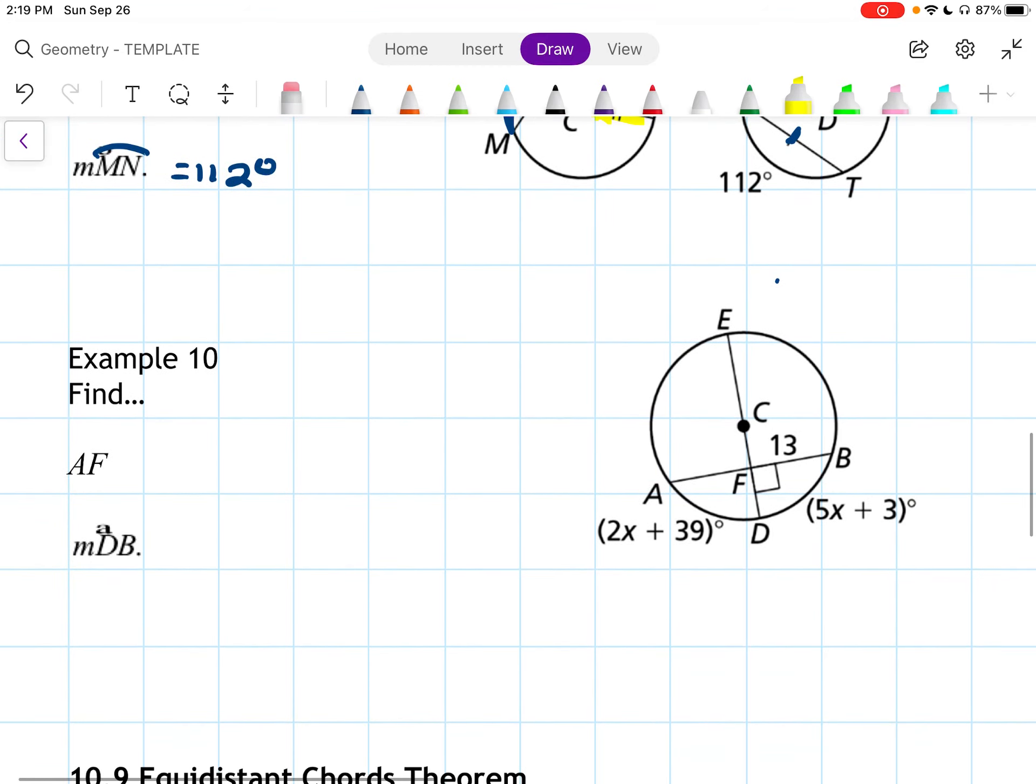Example 10. Find AF and then measure of arc DB. Well, AF is going to be equal to FB because that is a perpendicular bisector. So let me rephrase that. This here, segment ED is a diameter, so it bisects segment AB at point F right there. It also bisects the arc.